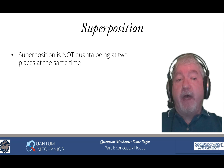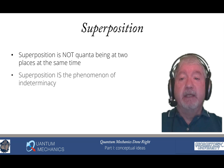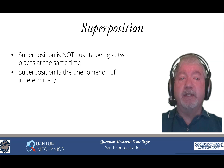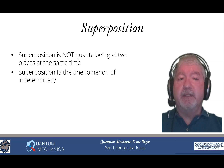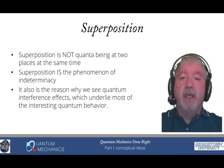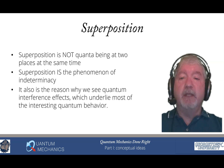Now let me go through those five concepts. The first is superposition. Superposition is not quanta being at two places at the same time — it is the phenomenon of indeterminacy. Indeterminacy is not exactly the same as saying the object is in two places at the same time, and understanding this subtle difference is actually quite important. Understanding what indeterminacy is is understanding what superposition is. It is the reason behind nearly all quantum interference effects and it's what underlies most of the interesting quantum behavior.